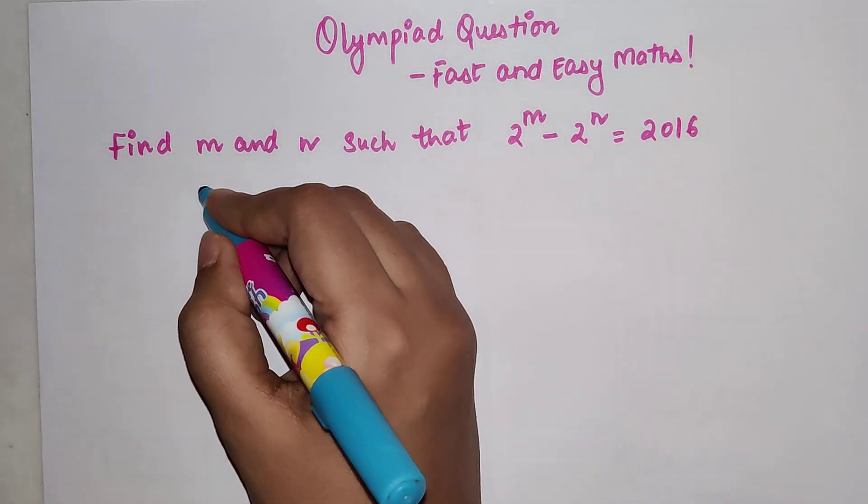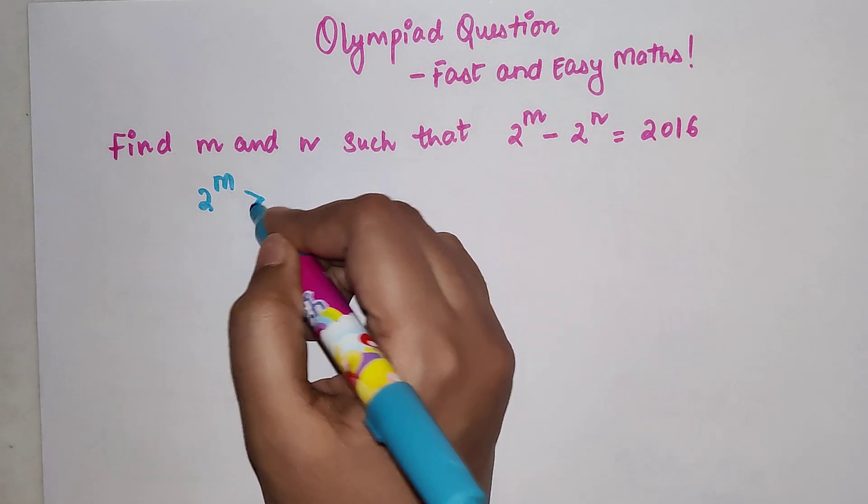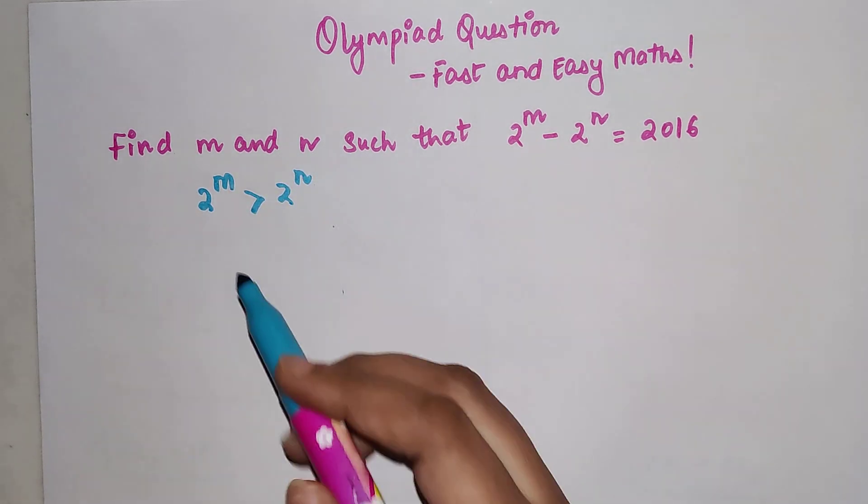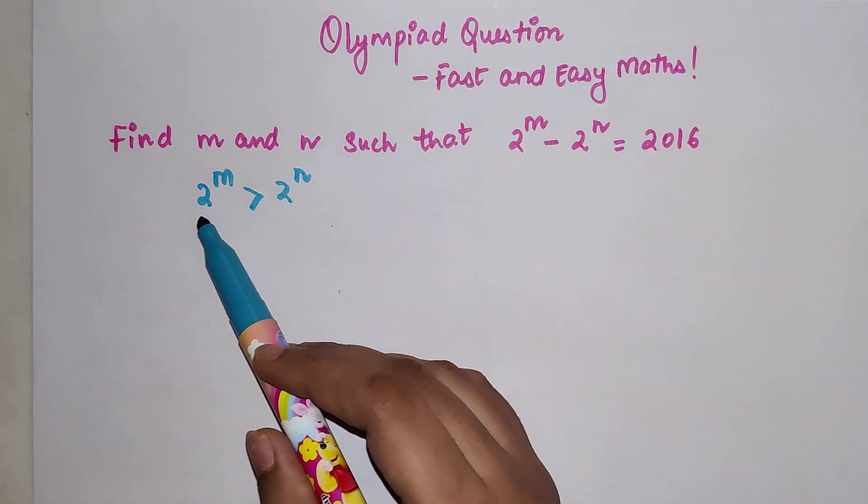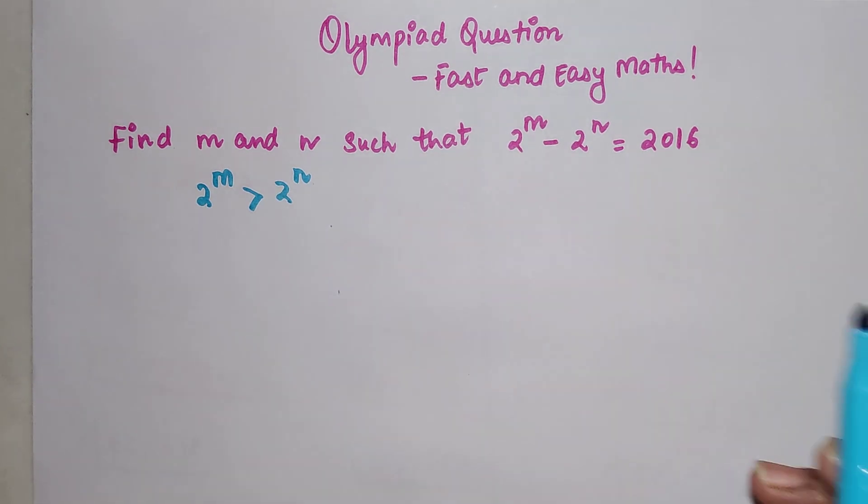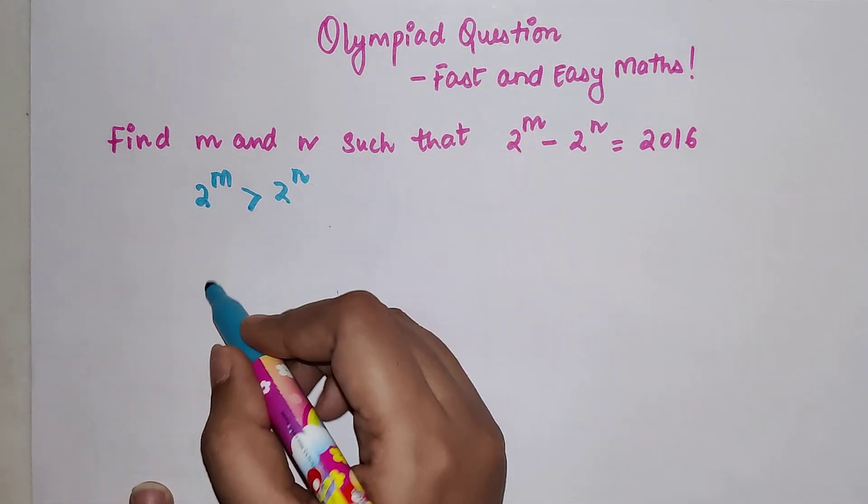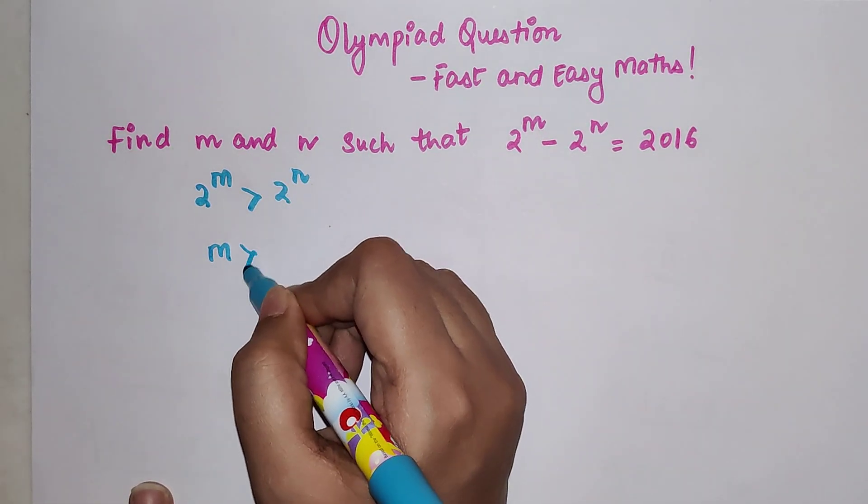When you subtract a smaller number from a greater number, only then your answer becomes positive. So from this I can say that m is greater than n. Now if I want to get rid of this greater than sign and put an equal to, I can write this as nothing but n plus some value which is k.